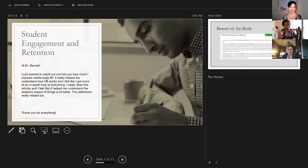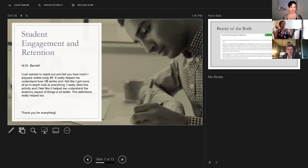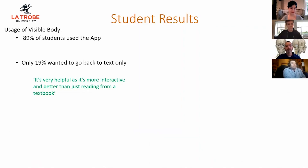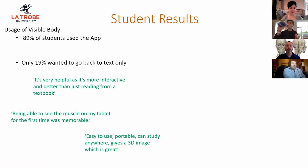And it's not just me. I want to share this email from a student: 'It really helped me understand and get an in-depth look. I really love how it gave me the anatomy aspect a lot better, and the definitions helped me too.' 84% of our students felt that the Visible Body content was useful and effectively supported their study of human anatomy. Here are some quotes from students: 'It's very helpful. It's more interactive and better than a textbook. It's easy to use, it's portable, we can study anywhere, and it gives a 3D image.' Being able to see the muscle on a tablet for the first time was memorable.